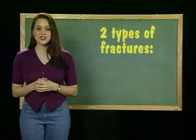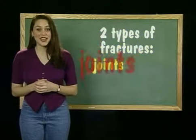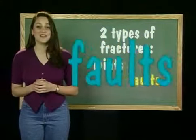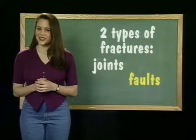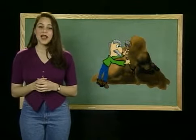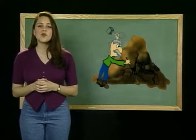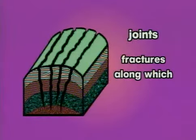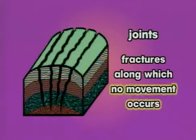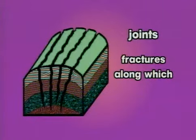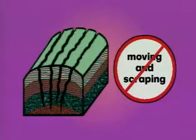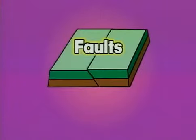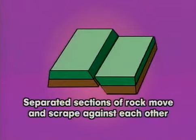There are two types of fractures: joints and faults. Faulting can contribute to mountain building. Joints are fractures along which no movement occurs — the rock is fractured, but the two separated parts aren't moving and scraping against each other. Faults are fractures in which the two separated sections of rock move and scrape against each other.